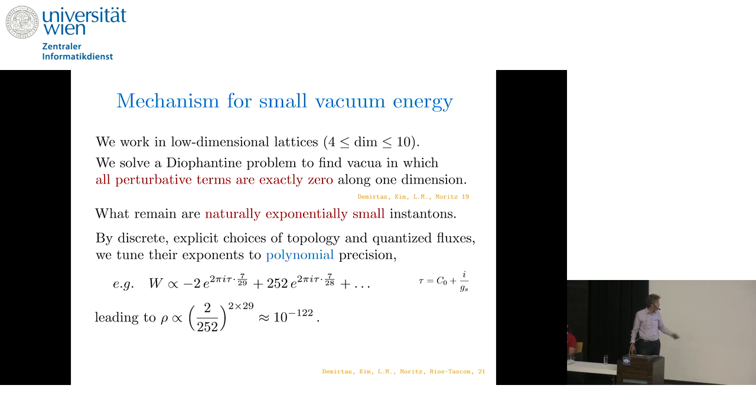Now, if one considers a superpotential of this form and tries to minimize it, the vacuum energy turns out to be, well, the ratio of these two terms, these two pre-factors, to a power that's determined by the difference of the exponents. And it turns out to be 10 to the minus 122.